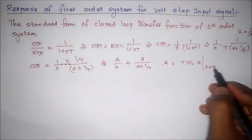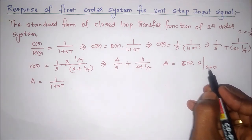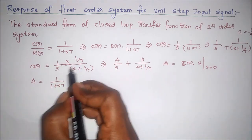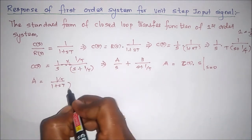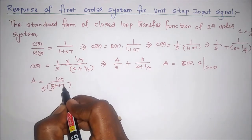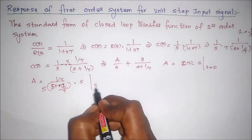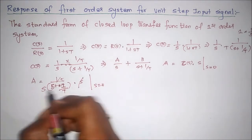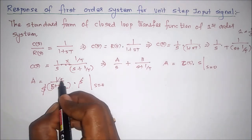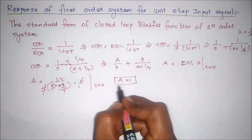To calculate A, we multiply C(s) by s and then set s equal to 0. Both s terms cancel each other. Substituting s equal to 0, we get (1/T) divided by (1/T), therefore A equals 1.